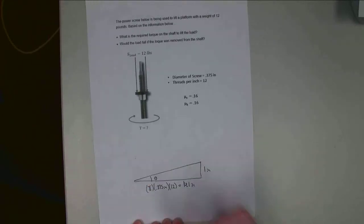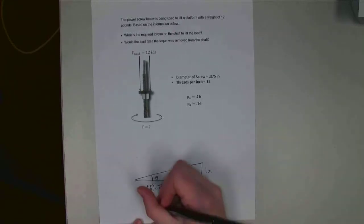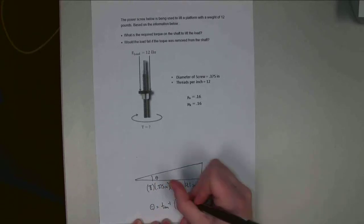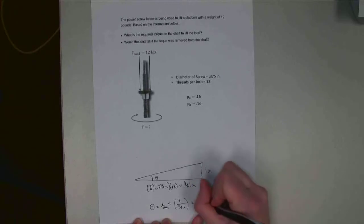Theta is my lead angle, and theta equals the arc tangent of 1 over 14.1. That turns out to be about 4.05 degrees.